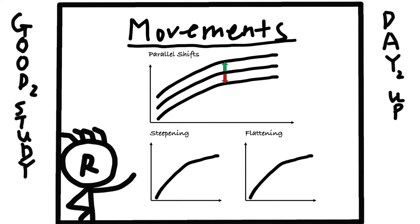Steepening and flattening happen quite often in real life. Steepening means the slope of the yield curve becomes steeper — this can happen when the expectation of future economic growth improves or the expectation for future inflation goes up. Flattening means the slope of the yield curve decreases, and this can happen when the expectation for the future economy and inflation worsens. In the most extreme case, the slope of the yield curve becomes negative, which we call an inverted yield curve.